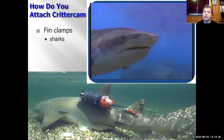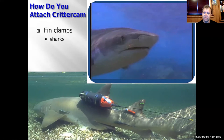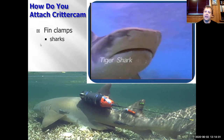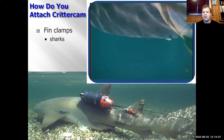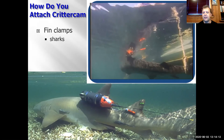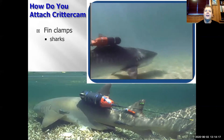For our sharks, we put these on the dorsal fin — on the fin on the back of the shark. This bottom picture is a nurse shark out in the Dry Tortugas National Park in the Florida Keys, where we were working with Dr. Jeff Carrier and Wes Pratt to study the mating behaviors of nurse sharks. Back in Australia with tiger sharks, we get these nice big tiger sharks next to the boat, collect data on how big they are, male or female, attach the camera, and send them off. Here you can see the back of the tiger shark's head as it swims over the seagrass beds.